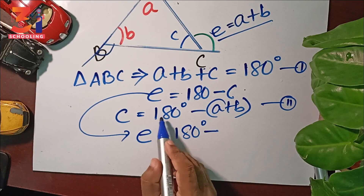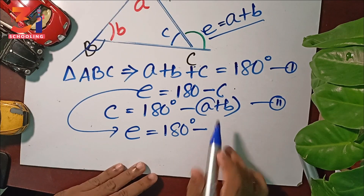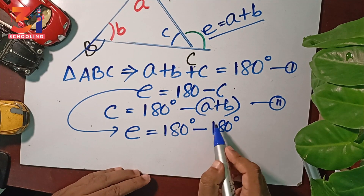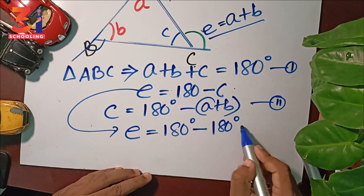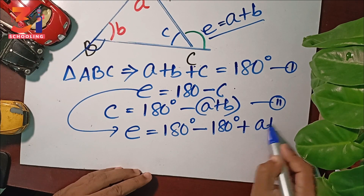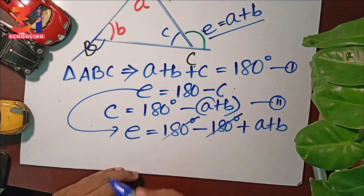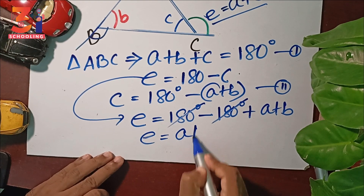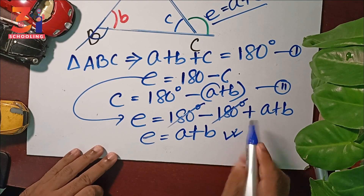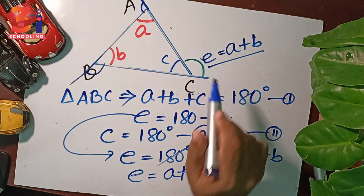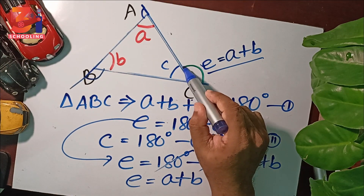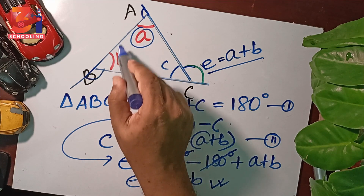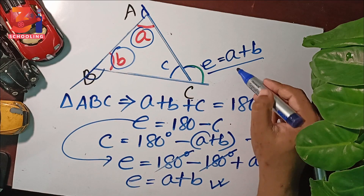C equals 180 degrees minus A plus B. Therefore, C equals A plus B. This proves that the exterior angle equals the sum of the two opposite interior angles.